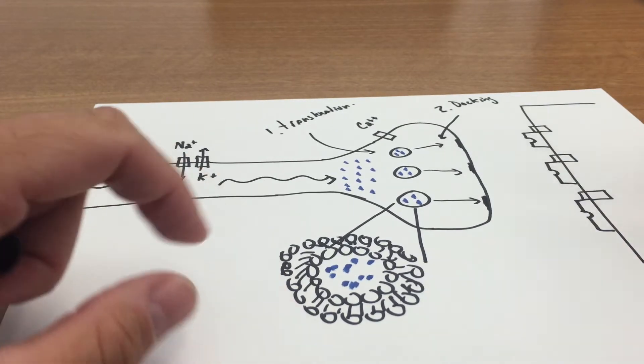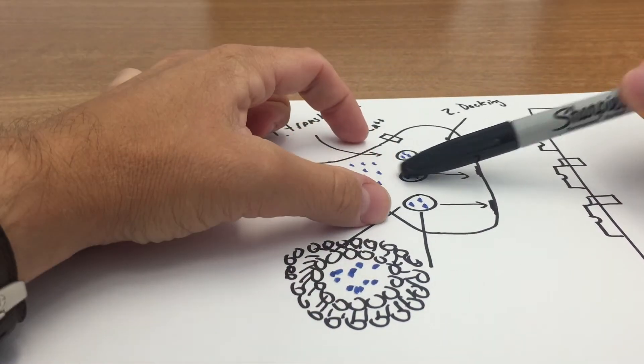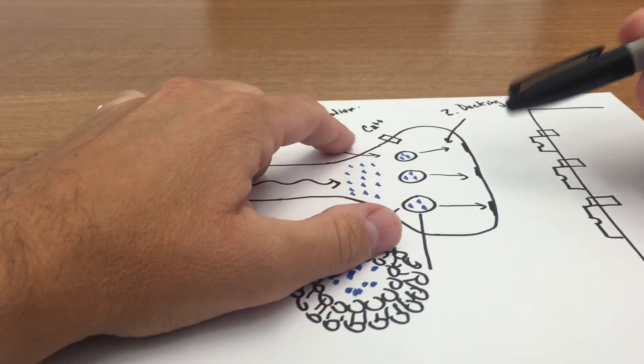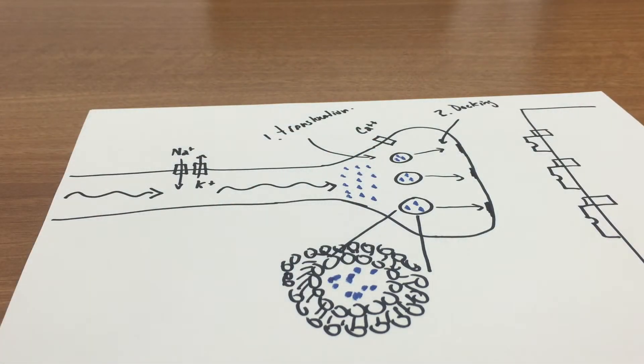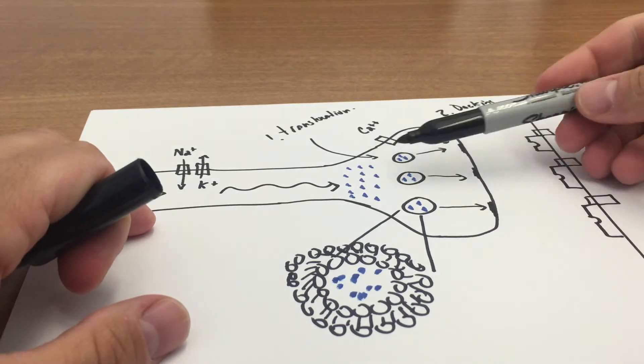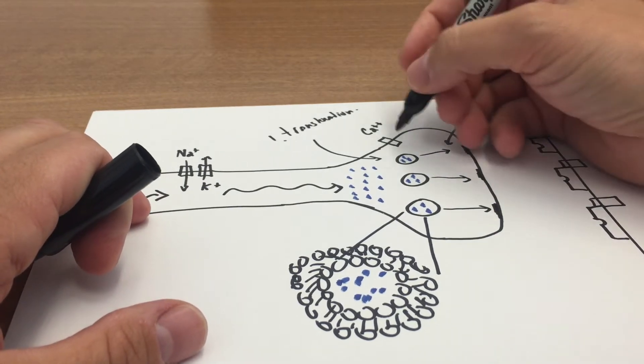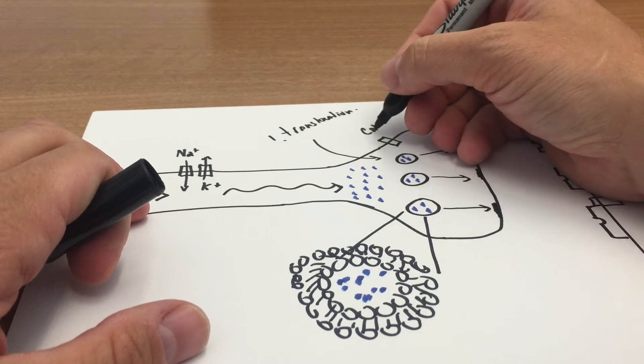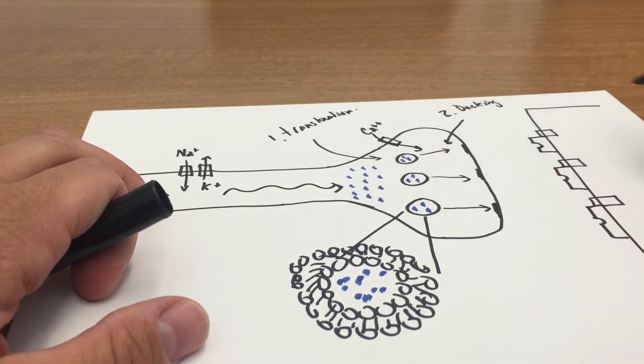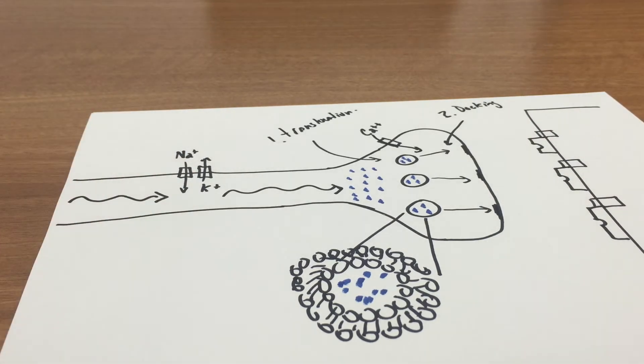Well, what we think goes on is as this wave of depolarization moves into here, you have these calcium channels here. These calcium channels are voltage gated, so they sense the change in the membrane potential. That change in membrane potential causes them to open, and when they open, they start dumping calcium out in here. Calcium can interact with certain proteins.